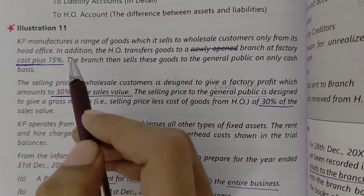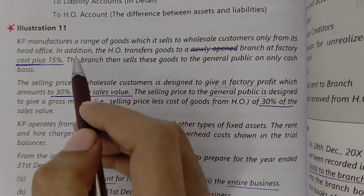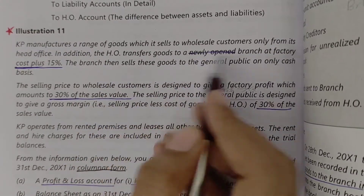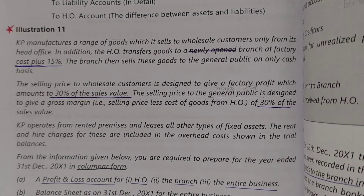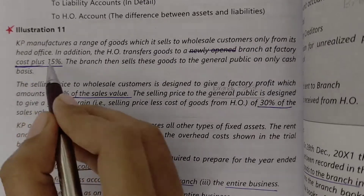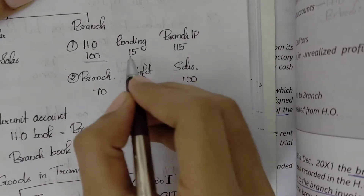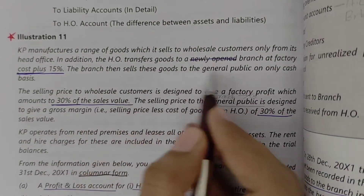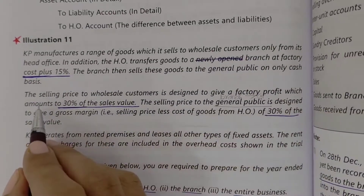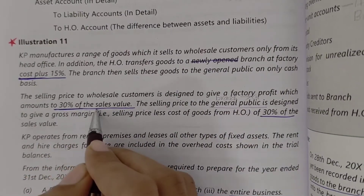Illustration 11: KP manufactures a range of goods which it sells to wholesale customers only from its head office. In addition, the head office transfers goods to the branch at factory cost plus 15%. So the invoice price is: cost 100 plus 15% loading equals 115. The branch then sells these goods to the general public only on a cash basis. The selling price to wholesale customers is designed to give a factory profit of 30% of sales value.